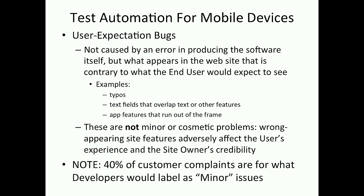And we have user expectation bugs. These things are just as bad as a crash caused by a software error. This isn't caused by any error itself, but it's something that appears wrong in the software — things like typos, text field overruns, things that run out of the frame. Very often, developers call these minor defects. In my opinion, there's no such thing as a minor defect — everything has to be fixed. Hewlett-Packard claims that 40% of its customer complaints are for what developers would call minor defects.